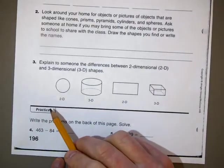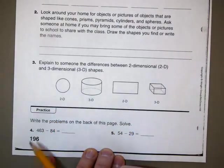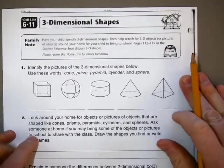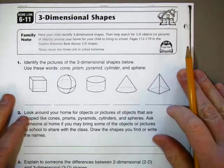Down here is your practice. You want to write the problems on the back of this page. These are subtraction problems. Then you want to try to solve it. This is homelink 6-11, three dimensional shapes.